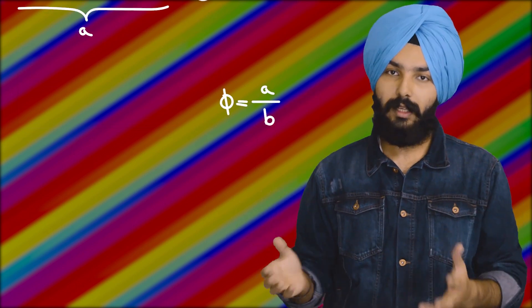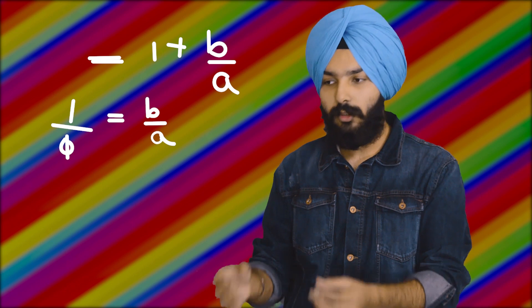Take a rectangle with sides A and B and let the ratio of these sides be phi, where A is the longer side and B is the shorter side. Let this ratio be equal to the ratio of the sum of the sides to the longer side, which is A plus B to A. Equating these two equations gives a quadratic equation, and its solution comes out to be 1.618, and many more digits. This ratio is called the golden ratio.